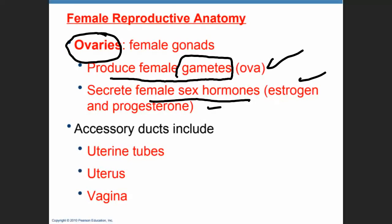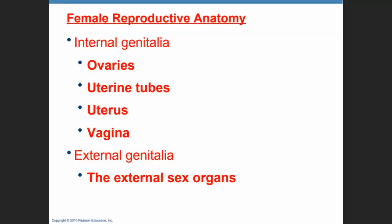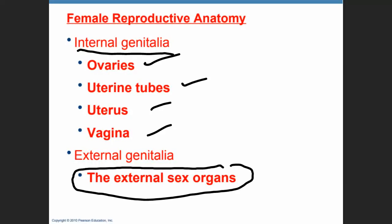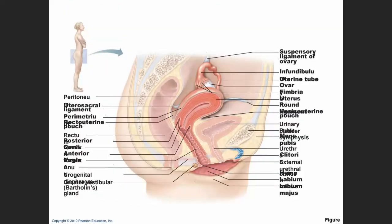Accessory ducts of the female reproductive system will be the uterine tubes, the uterus, and the vagina. The female reproductive anatomy can be divided into the internal genitalia housed in the pelvic cavity and the external genitalia in the pubis. Ovaries, uterine tubes, uterus, and vagina are part of the internal genitalia, and then we will talk about the external sex organs in subsequent PowerPoints.